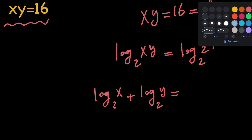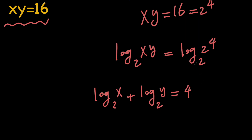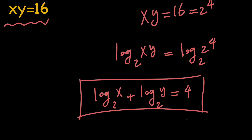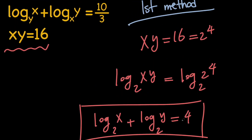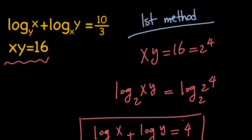So we're going to have 4 times log 2 with base 2, and log 2 with base 2 is 1, so we have 4 on the right hand side. This gives us the sum of two logs on the left hand side. So let's keep that in mind, and now let's go ahead and talk about the first equation.